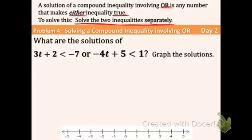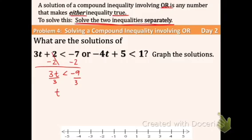Let's take a look at example four. We have 3t + 2 < -7 or -4t + 5 < 1. Let's focus on the left inequality. We're going to get t by itself: subtract 2, so 3t < -9. Divide both sides by 3, so t < -3.